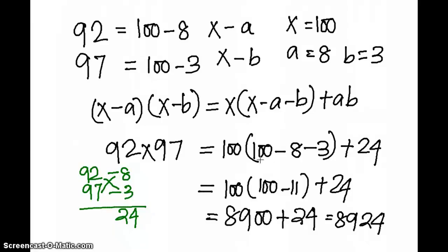Then we do a cross-subtraction: 92 minus 3 or 97 minus 8. That's what we do here. If you take 100-8 which is 92 minus 3, or 100-3 which is 97 minus 8, this is how the cross-multiplication works in this formula. Then 92-3 or 97-8, whatever you do, you land at 89.